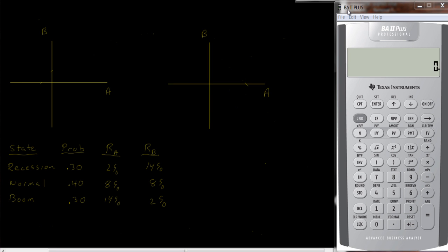I want to continue my discussion of covariance and correlation. In the previous video we looked at covariance and we also looked at perfect positive and perfect negative correlation. I should note that I didn't actually draw the graphs correctly in the previous video because I left everything in this positive quadrant, where A and B are both positive. But clearly A can be negative and B can be negative, so they could both be negative, in which case we'd be in this quadrant. Here A is negative and B is positive, and here A and B are both negative, so technically I should have drawn it this way.